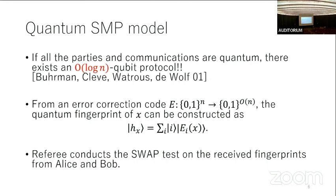The messages — the quantum fingerprints — can be constructed as superpositions of linear classical error-correcting codes. By conducting the swap test, the referee can identify whether the inputs are equal or not.